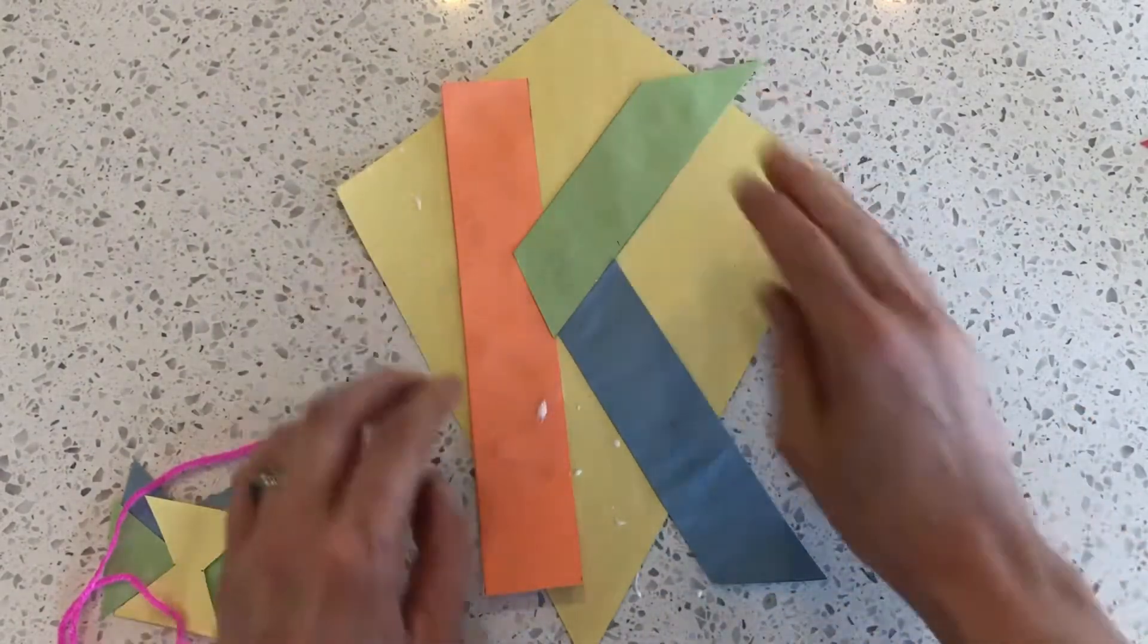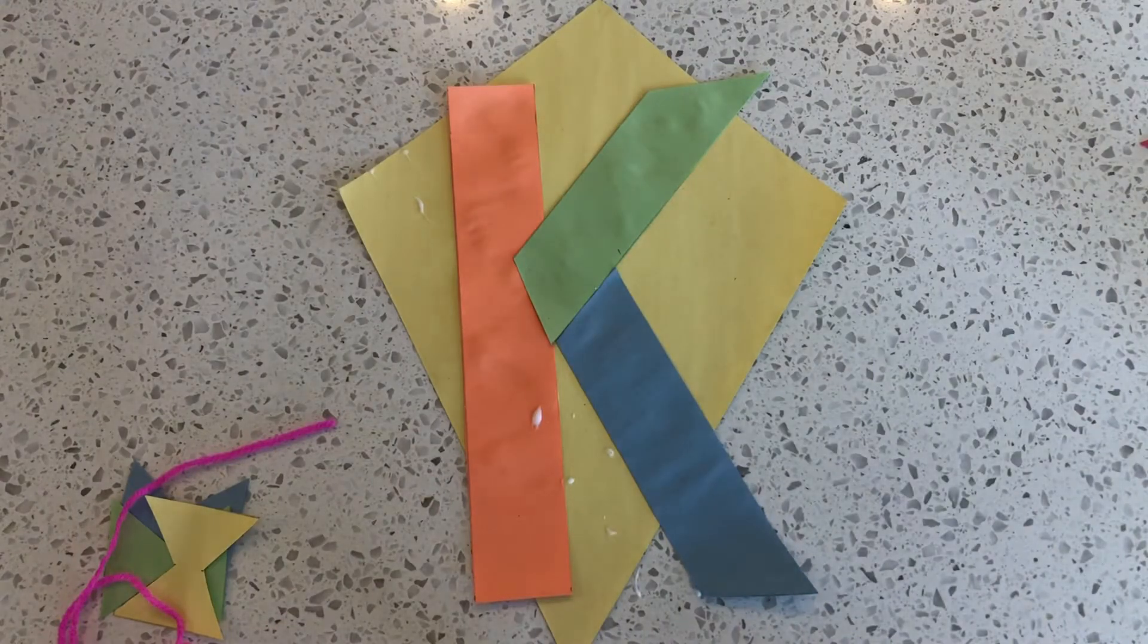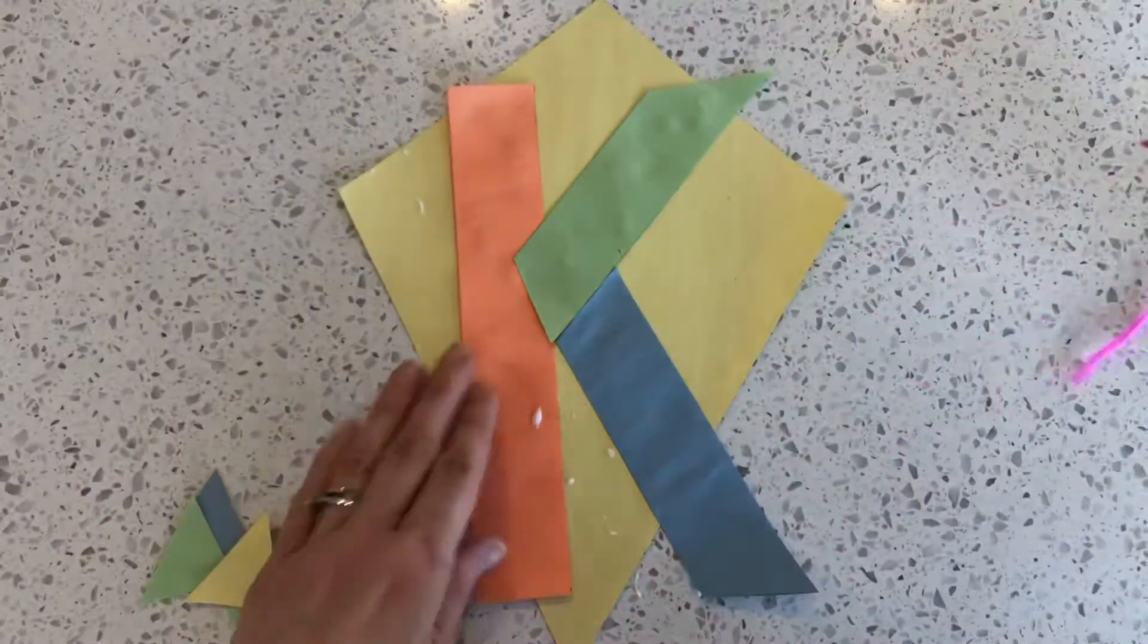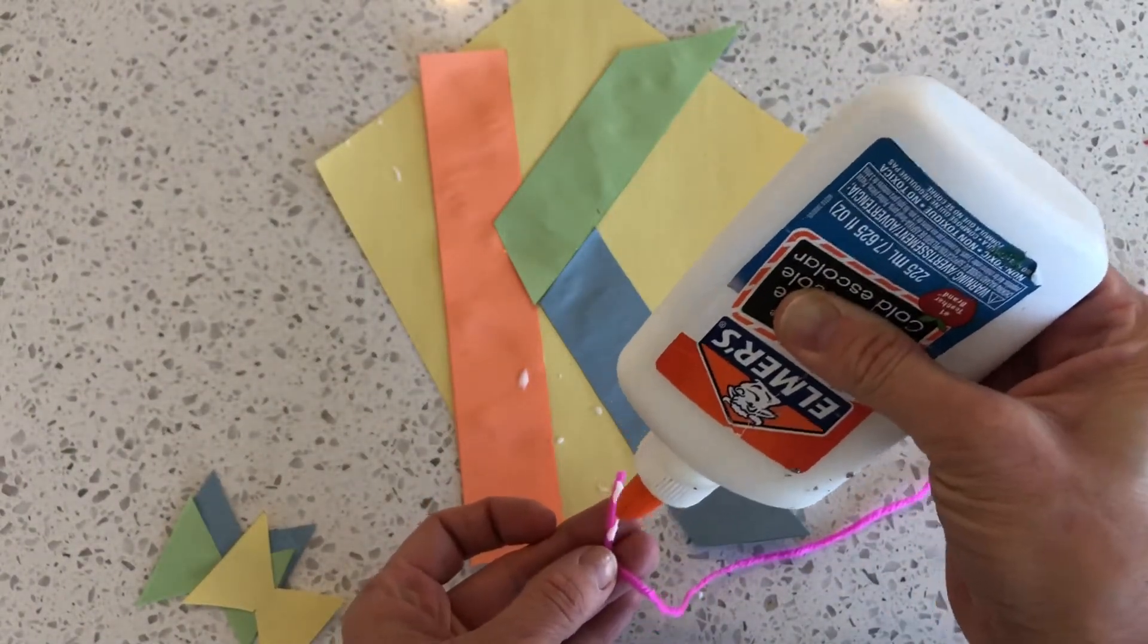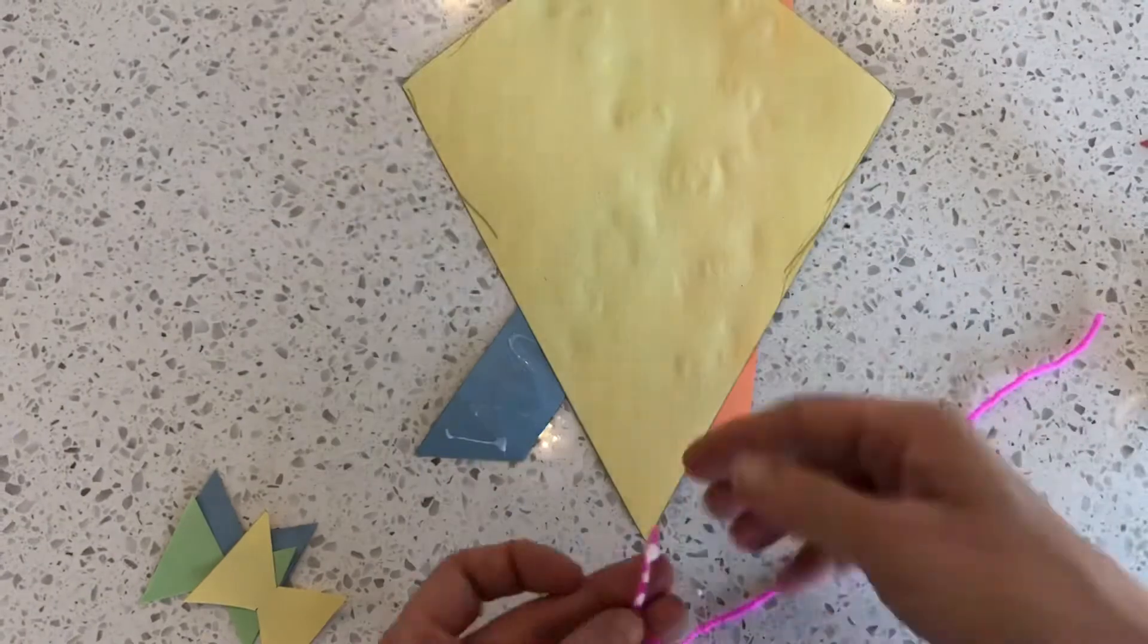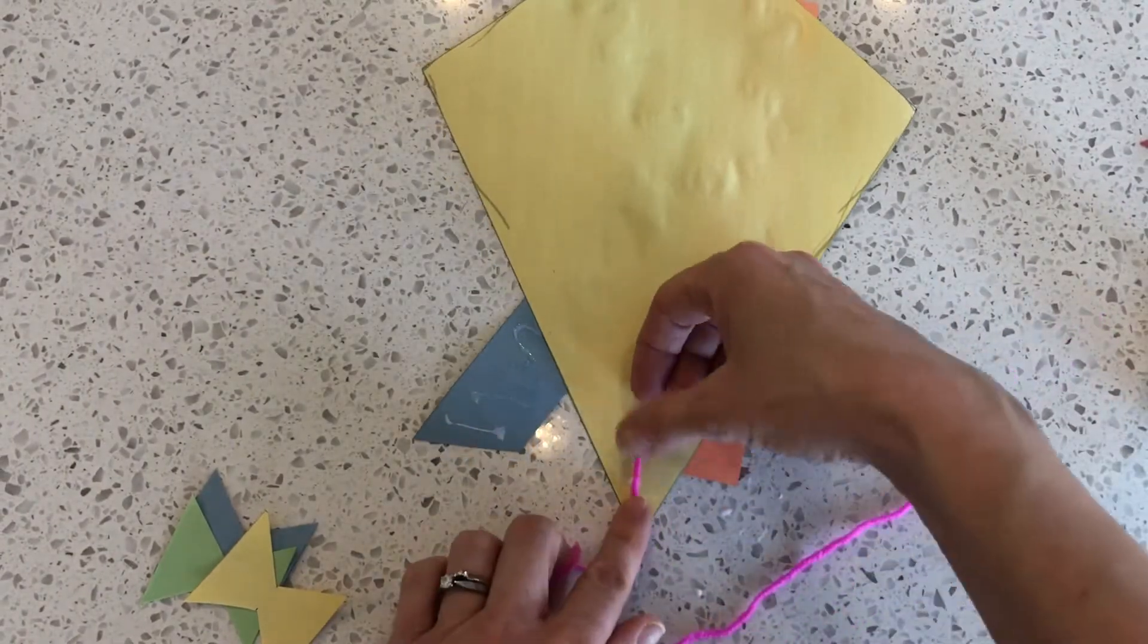Once you have your letter K glued on, you can glue on the string for your kite. Flip it over and glue it on to the back.